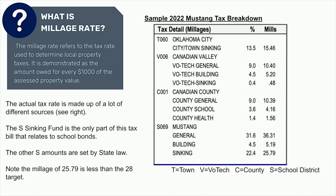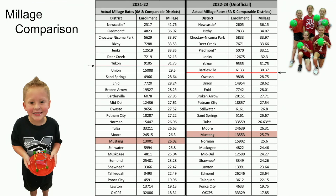To expand on this — where does this put Mustang? Let's take a look at tax rates among school districts across the state. In this graphic, you see school districts that are in the same size or close to our size or in the same proximity as Mustang. A historical view on the left for 2021-2022 shows Mustang with a millage or tax rate in the bottom third of the schools listed — actually 19 out of 27 listed, to be exact. This ranking is with a millage target of 28 mills, which we've been below in 11 of the past 12 years.